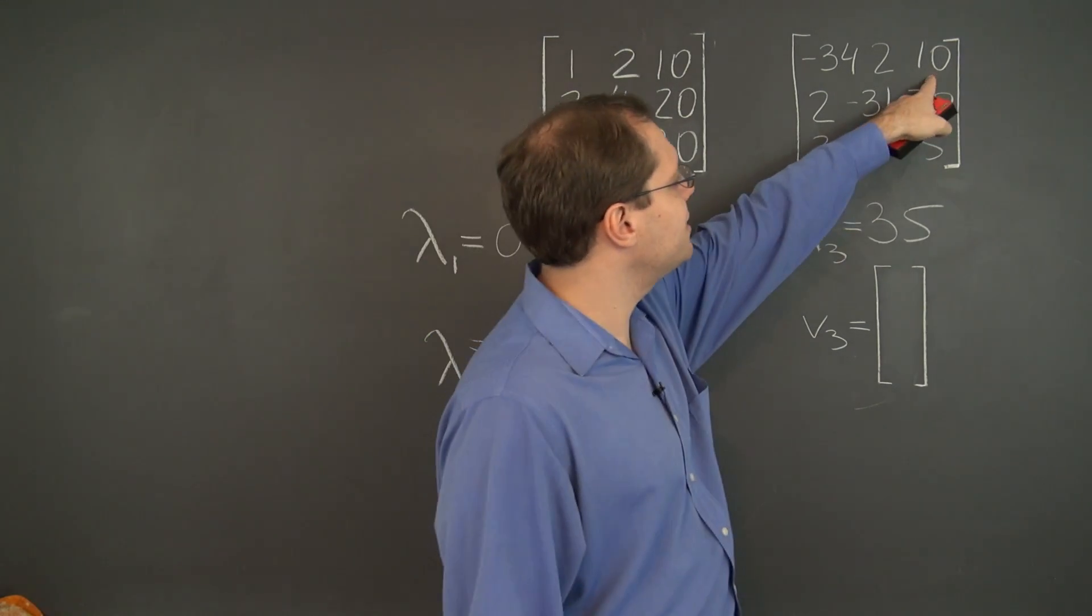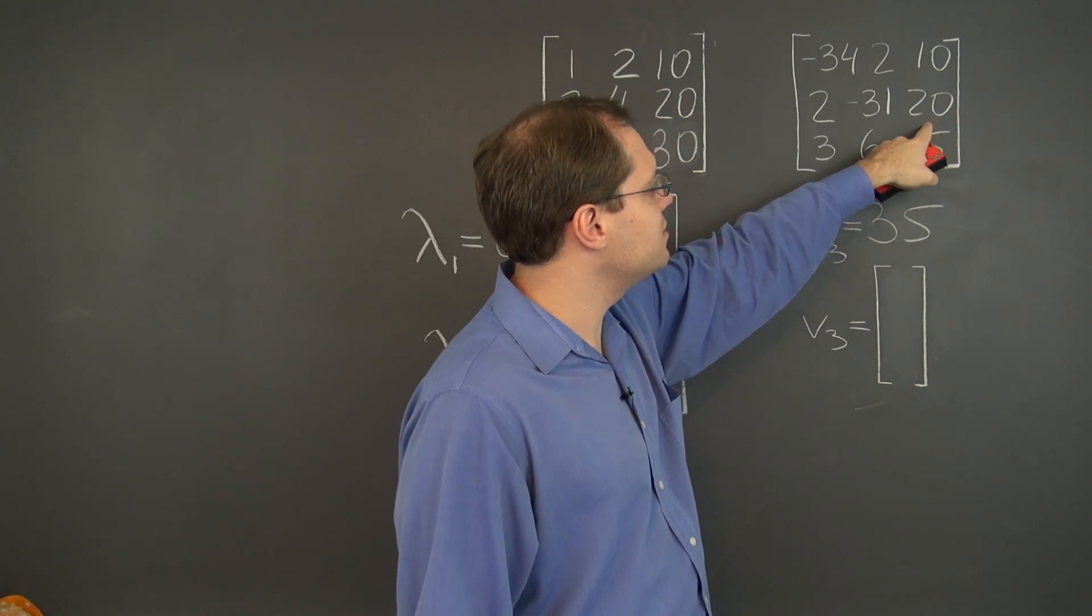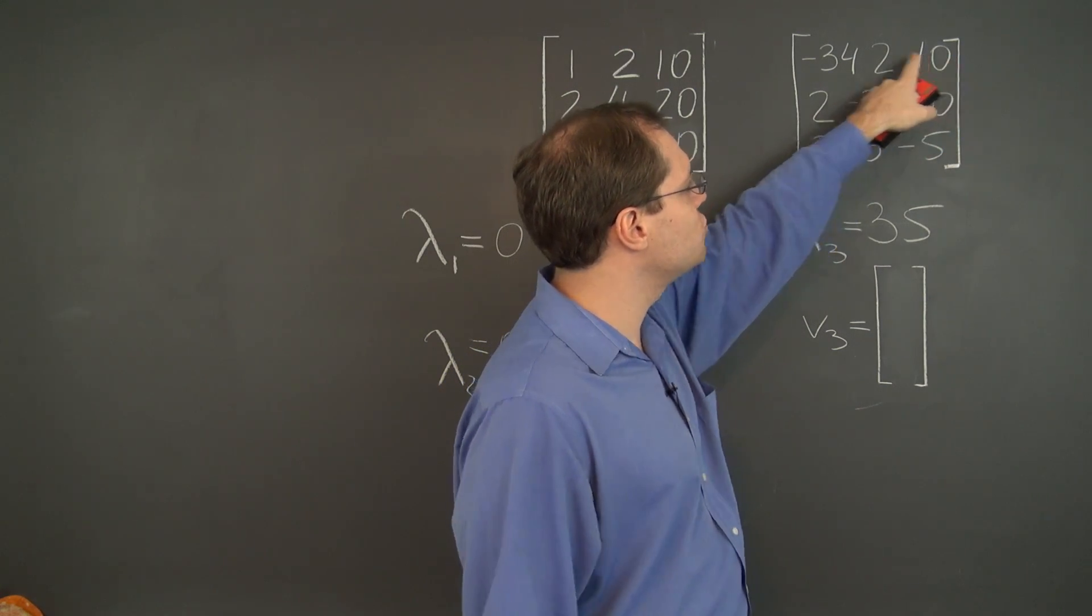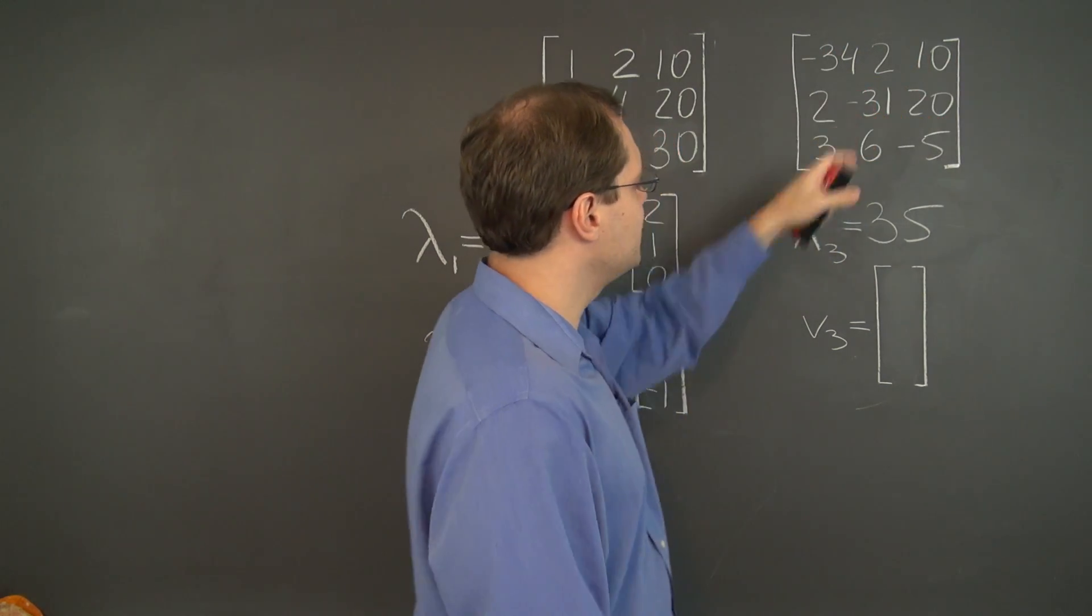So let's use the 10. All right, so using the 10, we have to eliminate this 20. And that, of course, is done by subtracting 2 of the first row from the second.